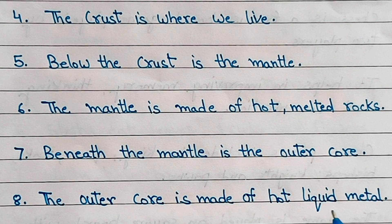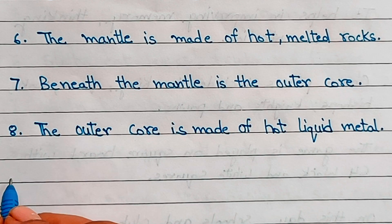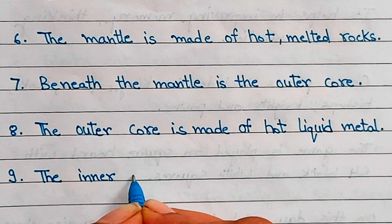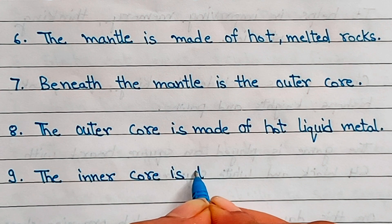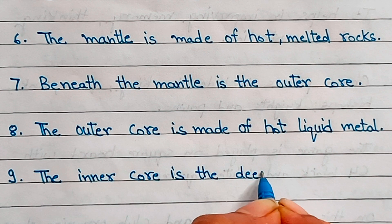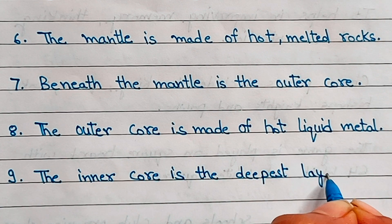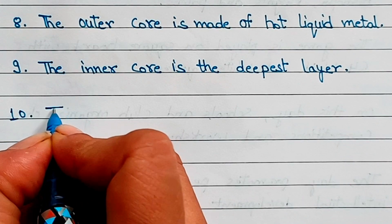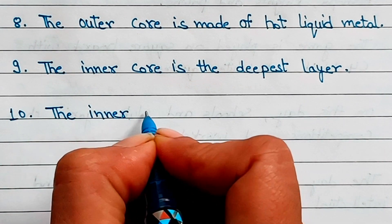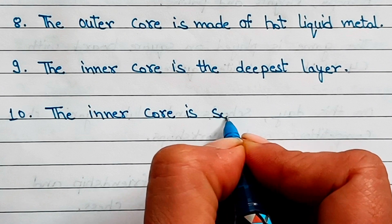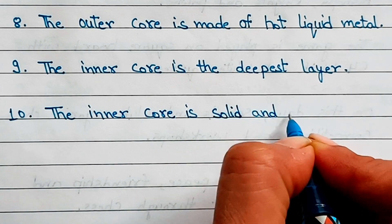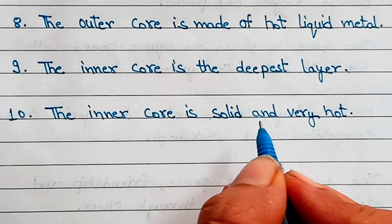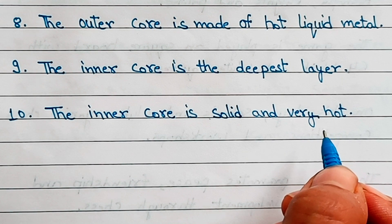The outer core is made of hot liquid metal. The inner core is the deepest layer. The inner core is solid and very hot. If you like this video, please like, share, and subscribe to my channel.